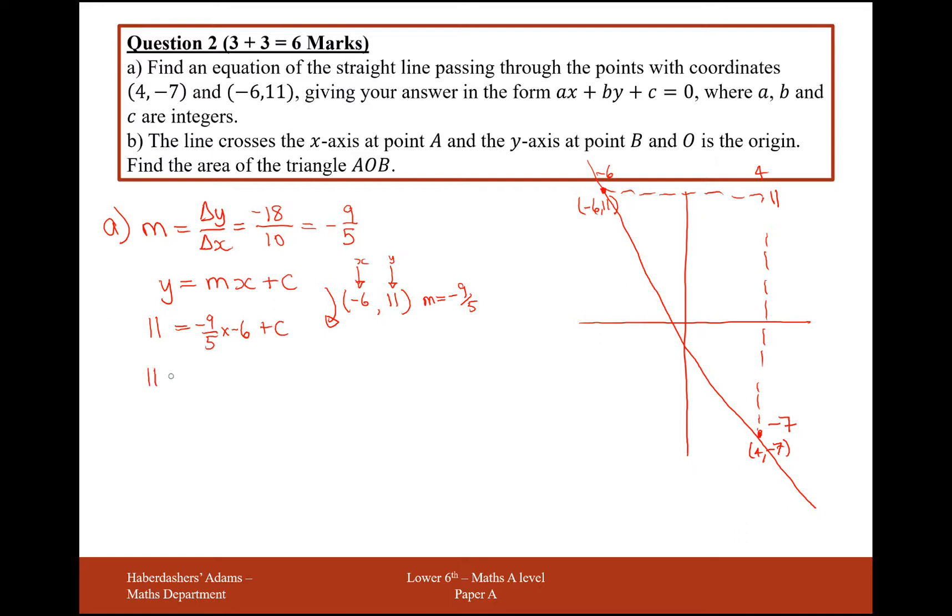That would be 11, I'll just tidy up this side here. That would give me 54/5 plus c. As a fraction over 5, this is going to be 55/5, and then I'll take away 54/5 to get c, so c must be 1/5.